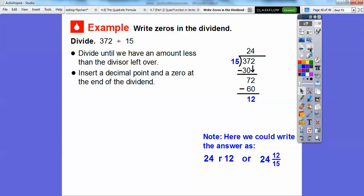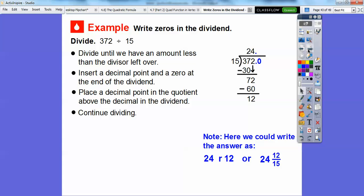Let's insert a decimal point and a zero at the end of the dividend. So there it is right there, there's the decimal and the zero. Now we're going to slide that decimal right up on top. Place a decimal point in the quotient above the decimal that's in the dividend. And let's just continue dividing.